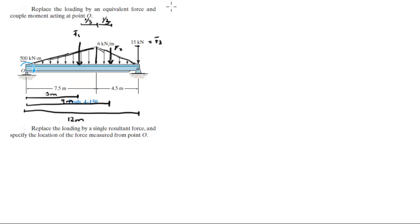Let's find the forces. F1 is the area of the big triangle, this long triangle right here. The area is equal to 6 kN per meter times 7.5 divided by 2 because it's a triangle, so this comes out to be 22.5 kN.